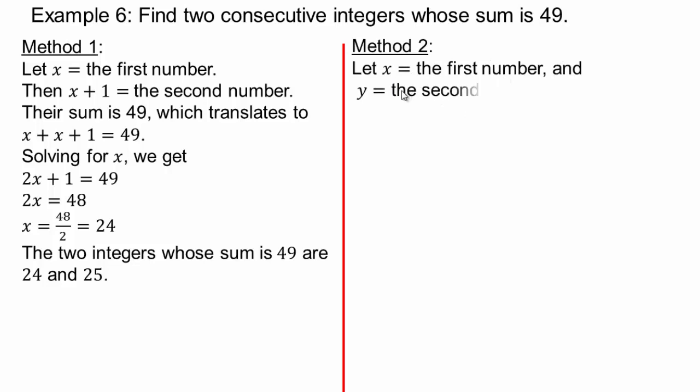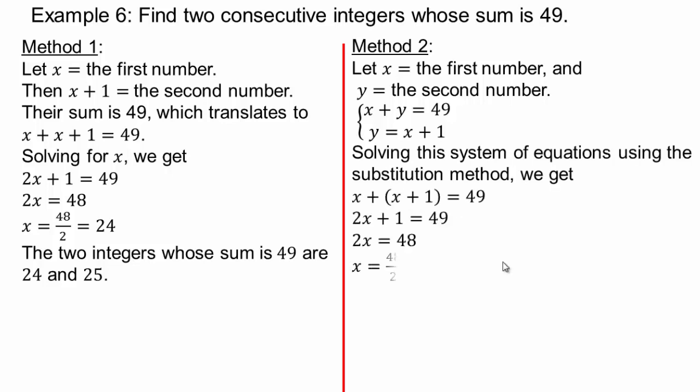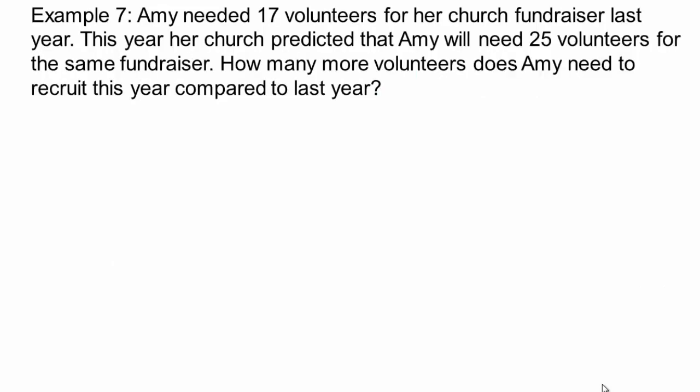In the second method, we say x is the first number, y is the second number. Their addition has to be 49. And the second number is one more than the previous number. So now you have a system of equations and you can use substitution method or any other method and solve for x. And again, you get the same answers. So you can choose what method comes to you naturally. That's what you will retain the most.